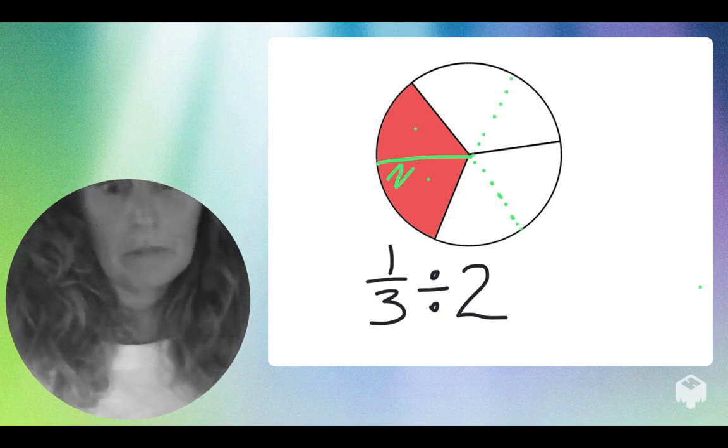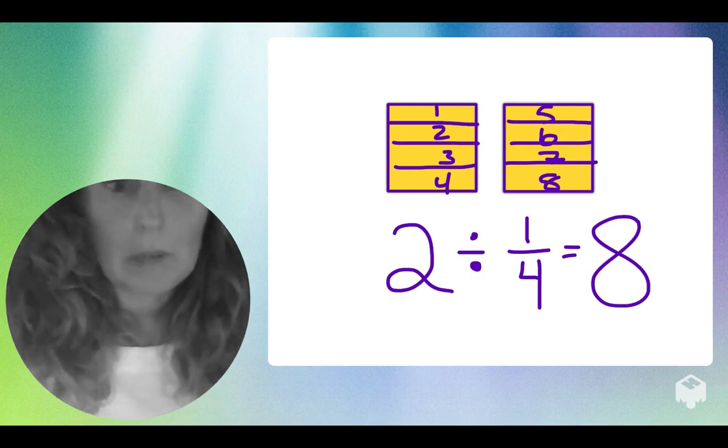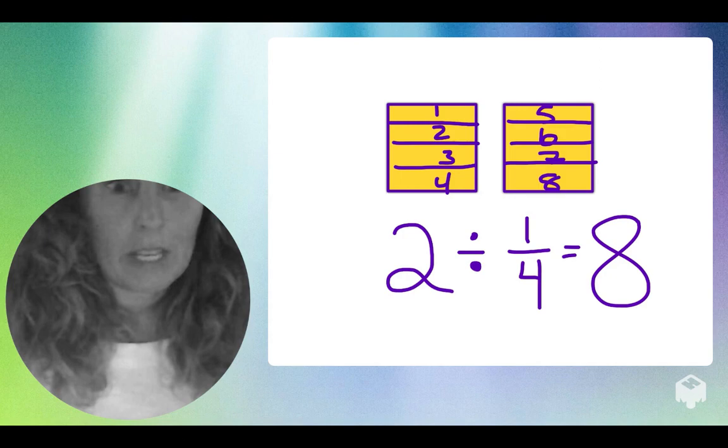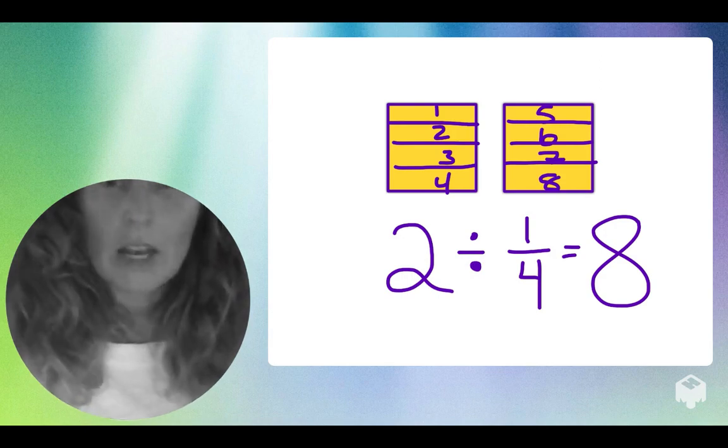And then the only thing to remind you about is that when we divide a whole number by a fraction, your original number is going to get bigger. That's something that's really confusing for a lot of kids because when you were little, your teachers told you all the time that division made numbers smaller. And that's true some of the time but not all of the time. So if you divide a whole number by an amount less than one and you end up with more pieces, just know that that is totally normal.